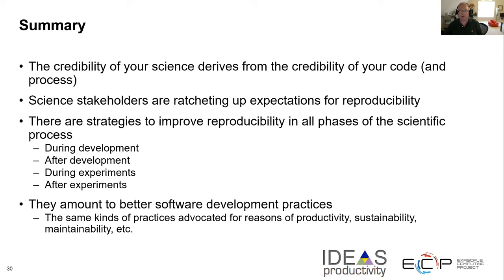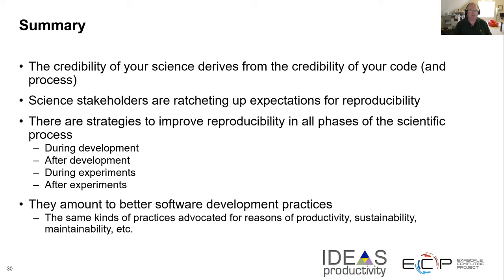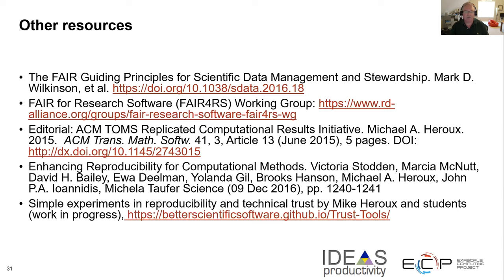To summarize: the credibility of your science derives from the credibility of your code and the process by which you use it. Science stakeholders — publishers, sponsors, and others — are ratcheting up expectations for reproducibility. But this is manageable. We've talked about strategies to improve reproducibility in all phases of the scientific process. You may not use all of them in every case, but you have a lot of ideas to build on to help improve your processes. Everything we talked about amounts to better software development practices — the same kinds of practices advocated for productivity, sustainability, and maintainability — and now they apply to reproducibility as well. So it's kind of a one-stop shop in that sense.